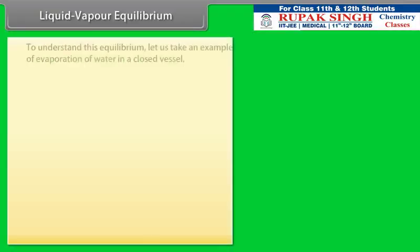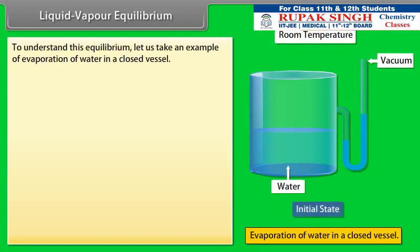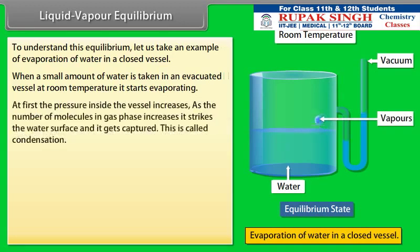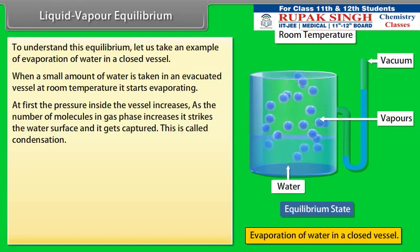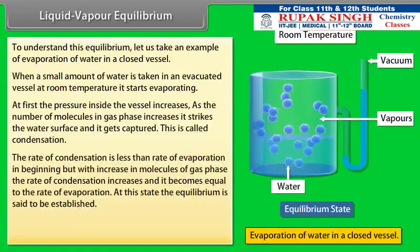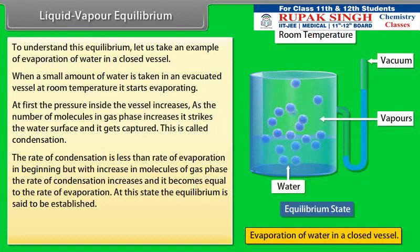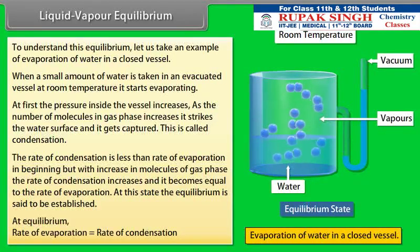Liquid-Vapor Equilibrium: Consider evaporation of water in a closed vessel. When a small amount of water is taken in an evacuated vessel at room temperature, it starts evaporating. At first, the pressure inside the vessel increases. As the number of molecules in the gas phase increases, they strike the water surface and get captured — this is called condensation. The rate of condensation is less than rate of evaporation initially, but as gas-phase molecules increase, the rate of condensation increases until it becomes equal to the rate of evaporation. At this state, equilibrium is established. Thus, at equilibrium, rate of evaporation equals rate of condensation.